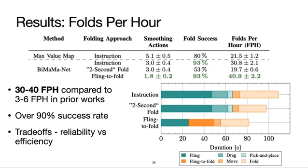BiMamaNet also achieves 30 to 40 folds per hour, compared to 3 to 6 in prior works, with a success rate of over 90%. When comparing the different folding methods, we observe the following trade-off. The 2-second fold has a shorter duration, however, it is less reliable than the folding lines. The fling to fold method is both efficient and reliable, but requires knowing the garment's dimensions in advance.